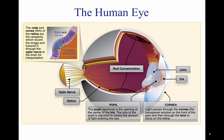Of all the senses, vision is the most important for safe flight. Most of the things perceived while flying are visual or heavily supplemented by vision. As remarkable and vital as it is, vision is subject to limitations such as illusions and blind spots. The more a pilot understands about the eyes and how they function, the easier it is to use vision effectively and compensate for potential problems.